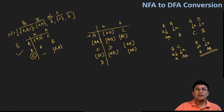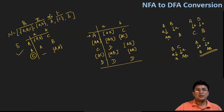The dead state on small a remains at the dead state, and on symbol b it also remains at the dead state. This is the thumb rule: once a dead state is created, the transitions of the dead state are always mapped back to that dead state itself.